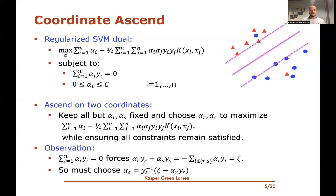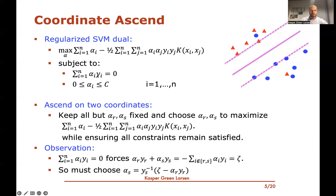So the basic idea we'll pursue is to do coordinate ascent on two coordinates at a time. The basic idea is to pick two coordinates, alpha_r and alpha_s, and fix everything else, treating them as constants we cannot change. Now we're going to change alpha_r and alpha_s together to maximize this objective when everything else remains fixed, while ensuring that all these constraints remain satisfied.